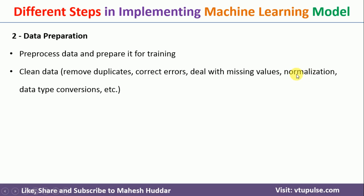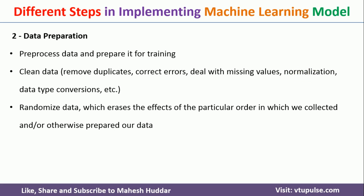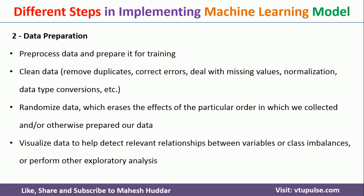Another important step is normalization. If the data is not distributed normally, it may not give you proper results. Next is randomization of the collected data, because while collecting data we may have followed a particular approach, causing the data to be collected in a specific order. That order may add some bias into your model, so we need to randomize the data.